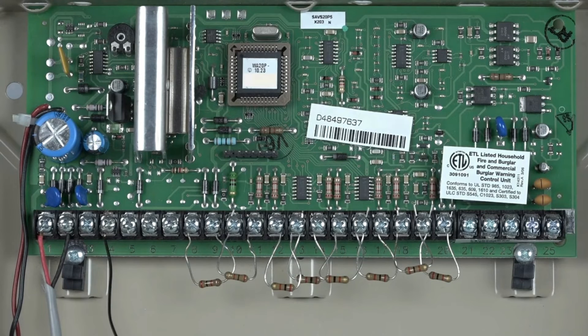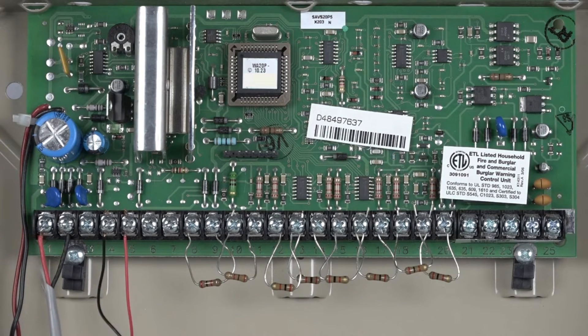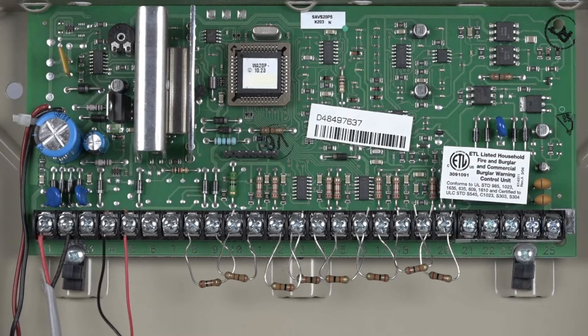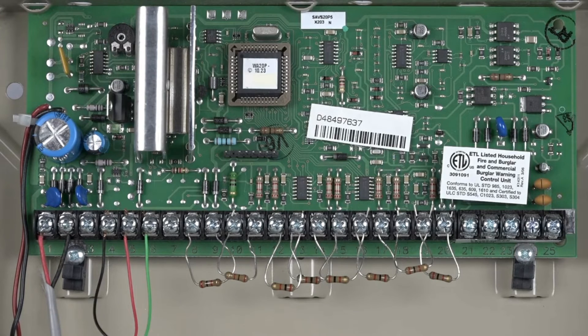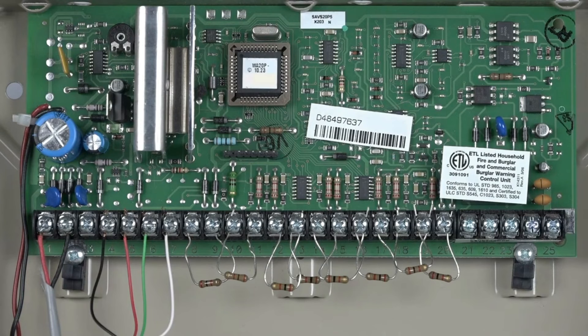Connect the black or negative wire to terminal 4. Now connect the red or positive wire to terminal 5. The next wire will be green or data in on terminal 6. Lastly your yellow or data out wire will be connected to terminal 7.